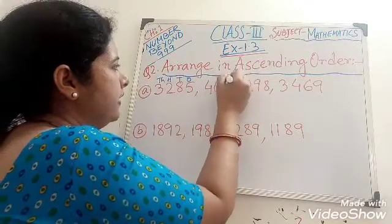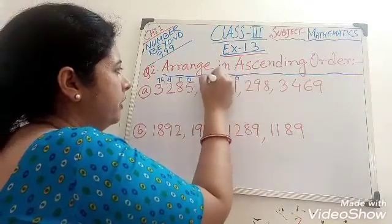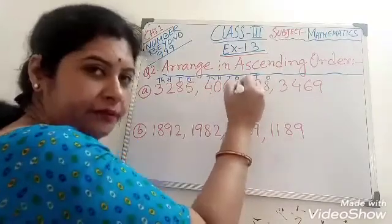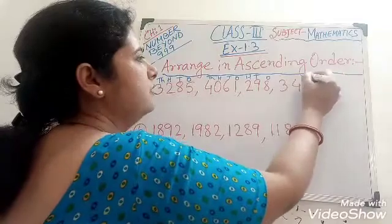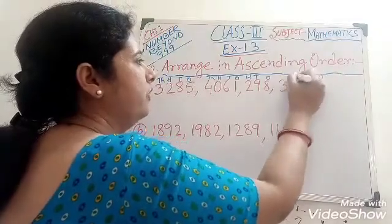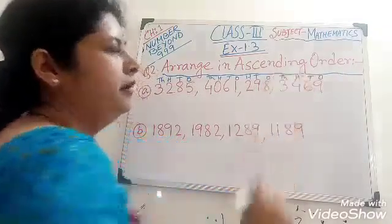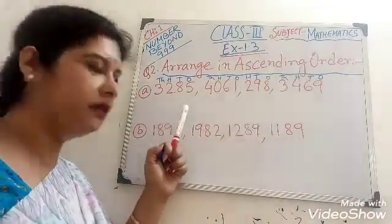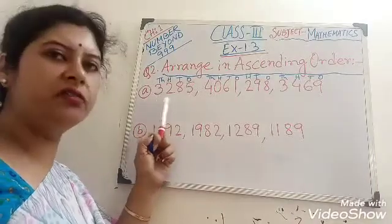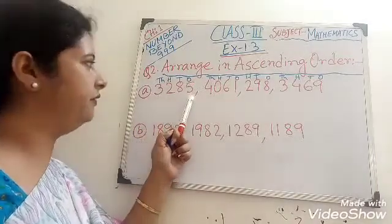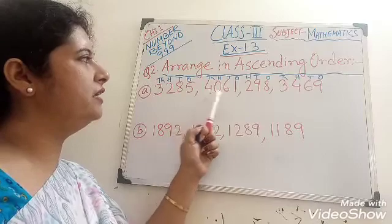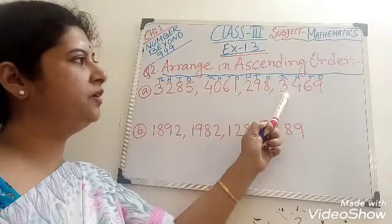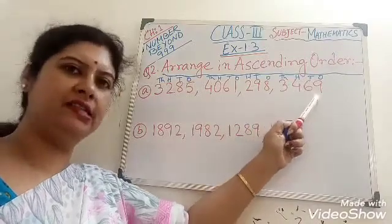1's, 10's, 100's, 1000. 1's, 10's, 100's. 1's, 10's, 100's, 1000. Now observe the numbers carefully. First of all, read out all the numbers: 3,285; 4,061; 298; and 3,469.